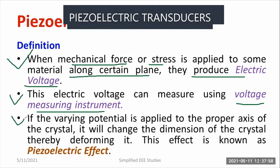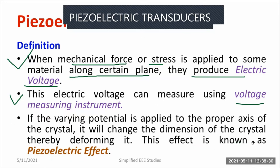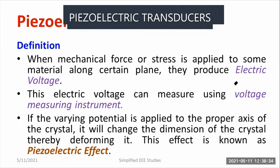What is the working principle of piezoelectric transducer? The working principle is the piezoelectric effect. What do you mean by piezoelectric effect? If the varying potential is applied to the proper axis of the crystal, it will change the dimension of the crystal and thereby deformation will take place on the crystal. Due to that deformation, electricity will be generated across another point. That phenomenon is generally known as piezoelectric effect. So in parallel to the deformation, electrical voltage will be generated due to the application of mechanical stress or pressure or force. That voltage can be measured using either analog or digital methods.